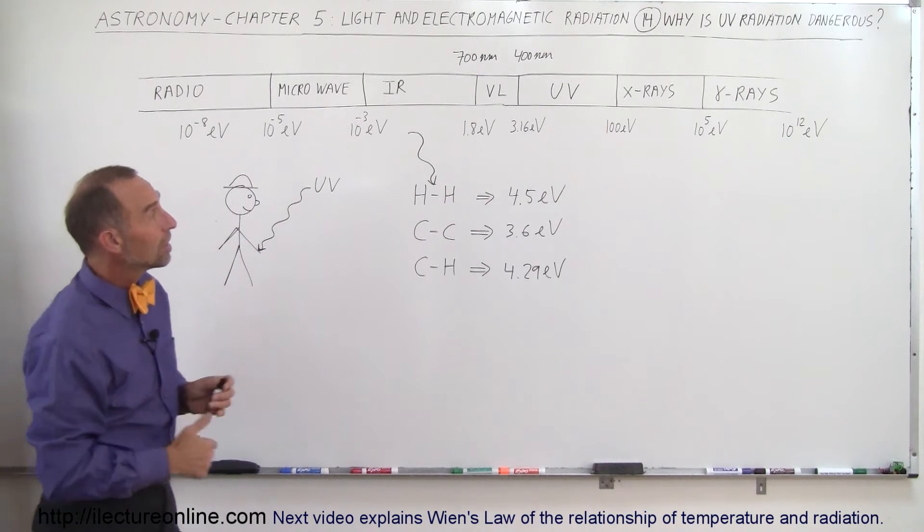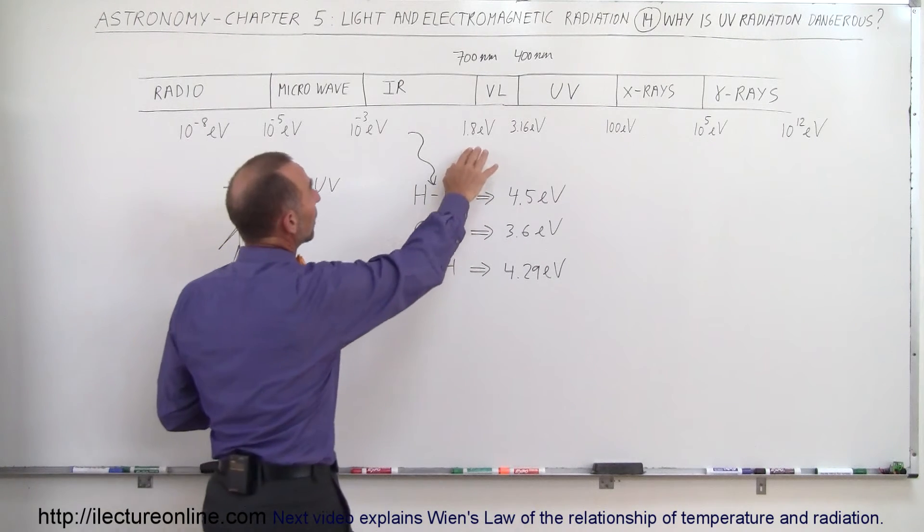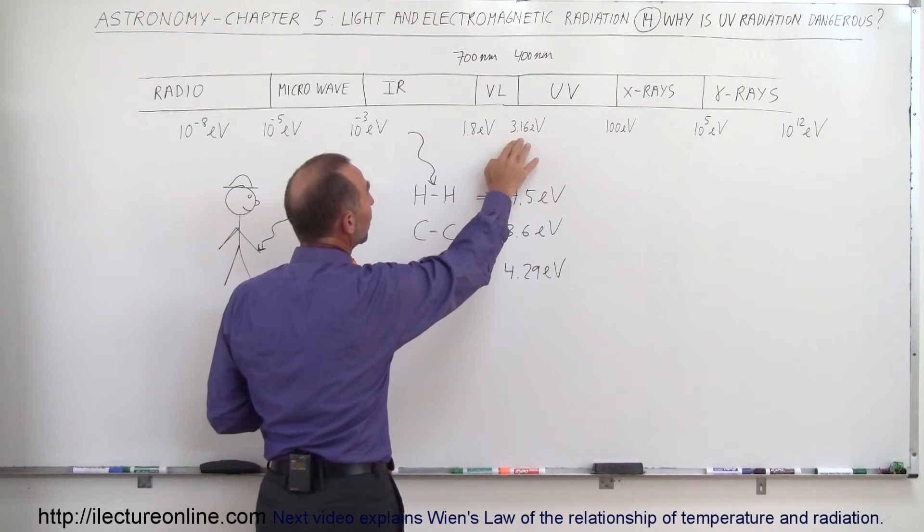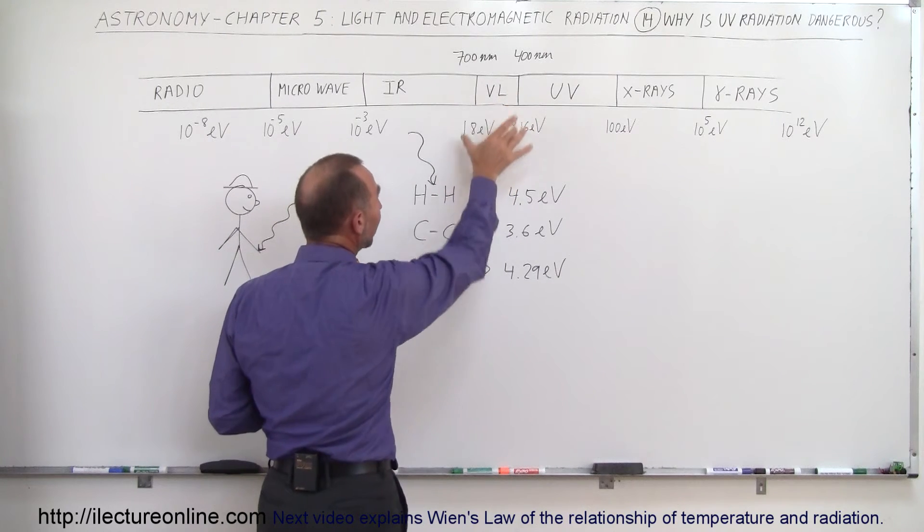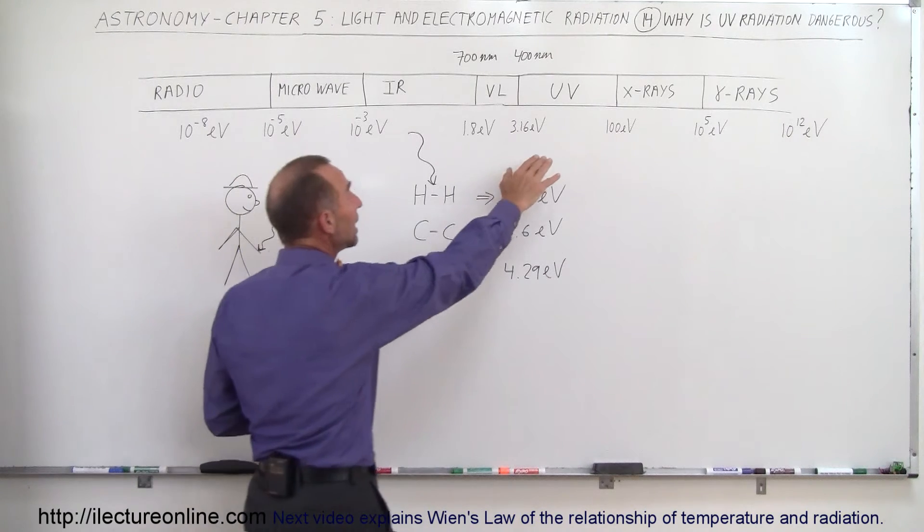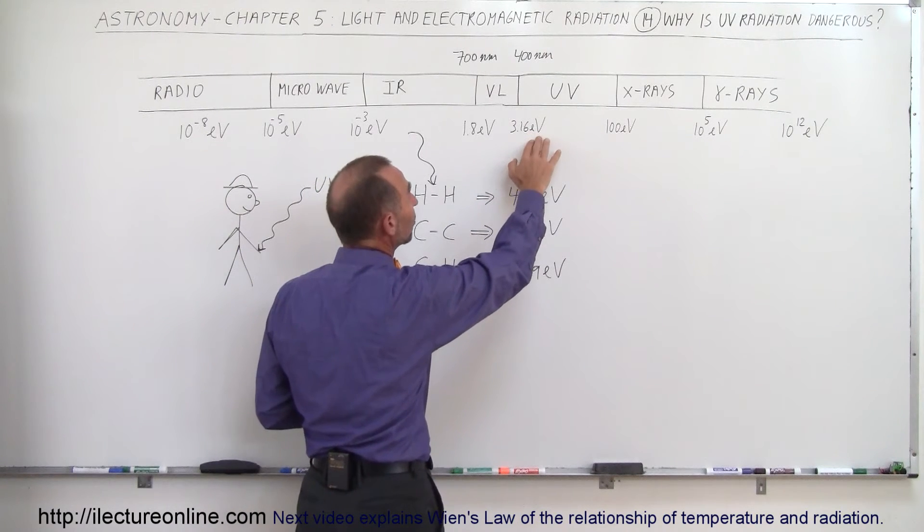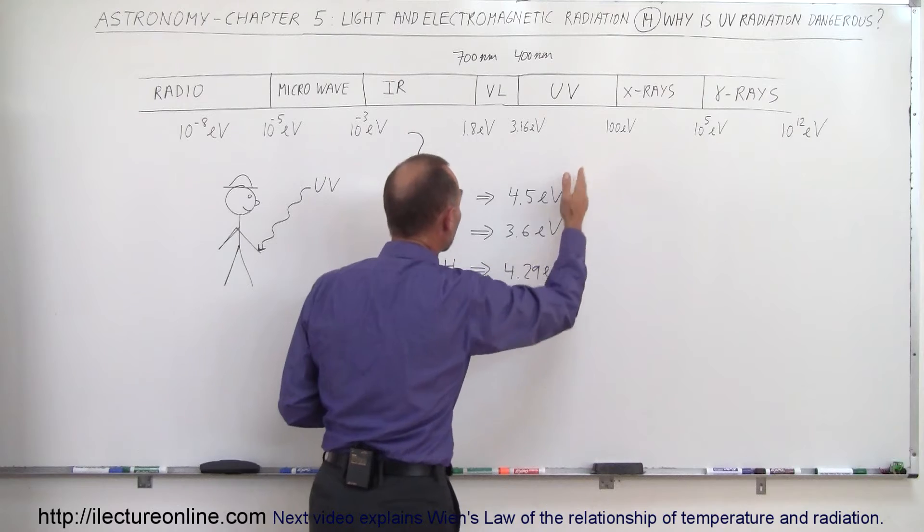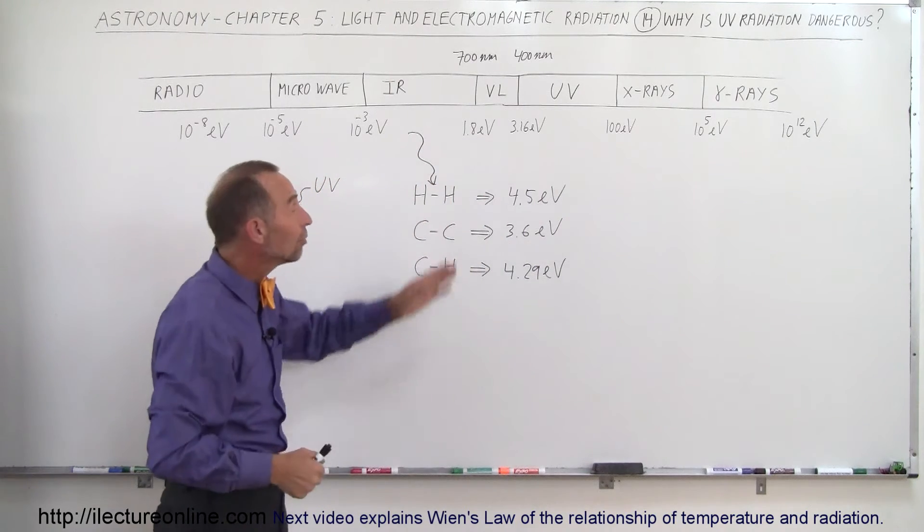And so you can see here that visible light is anywhere from 1.8 to 3.16 electron volts, which does not carry enough energy to break any of these bonds. But UV radiation, which has more than 3.16 electron volts, all the way up to 100 electron volts, that could break these bonds apart.